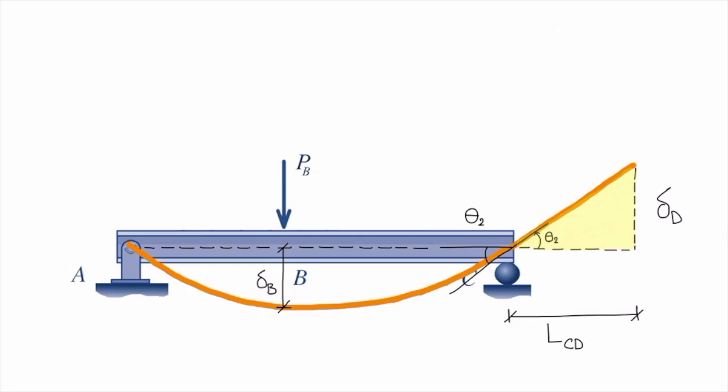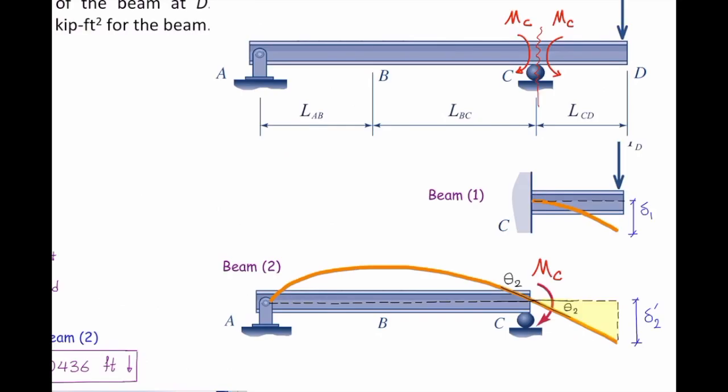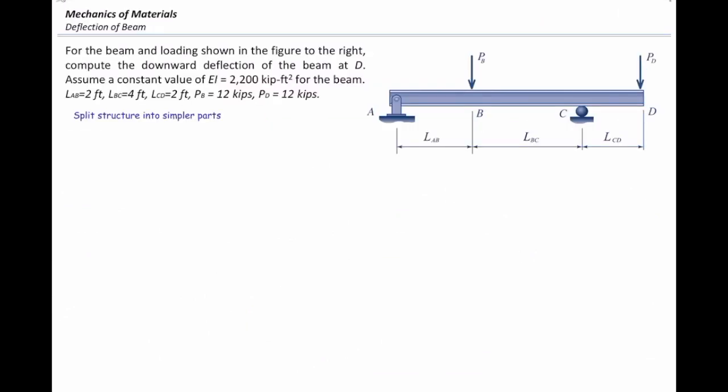So far we have learned two important techniques: first, how to calculate the indirect deflection in a beam, and second, how to deal with the effect of internal moment or the hidden moment on the beam's deflection.